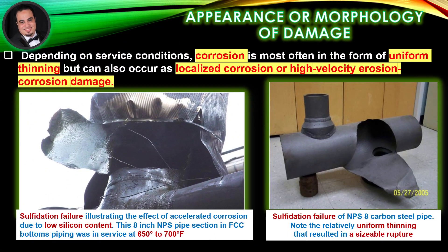Appearance or morphology of damage: Depending on service conditions, corrosion is most often in the form of uniform thinning, but can also occur as localized corrosion or high-velocity erosion-corrosion damage. Figures show sulfidation failure illustrating the effect of accelerated corrosion due to low silicon content. This 8-inch NPS pipe section in FCC bottoms piping was in service at 650°F to 700°F. Note the relatively uniform thinning that resulted in a sizable rupture.